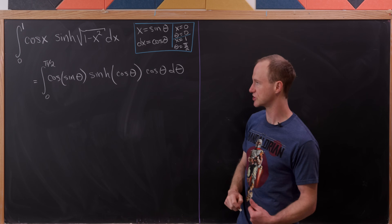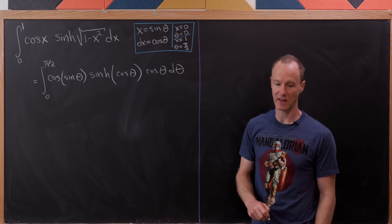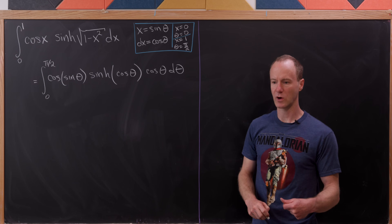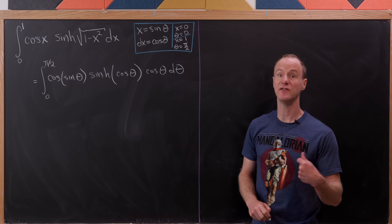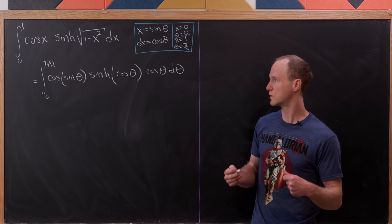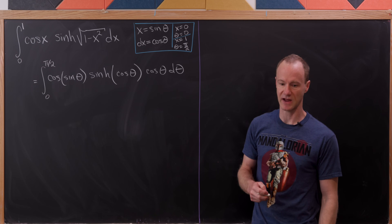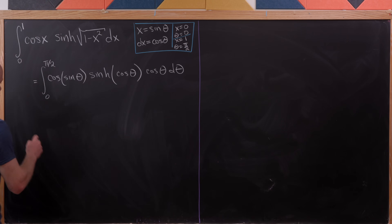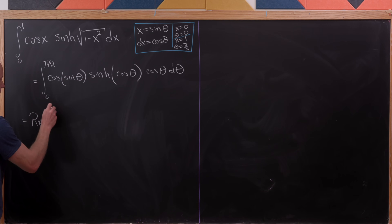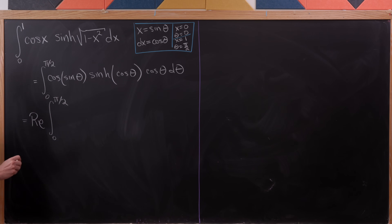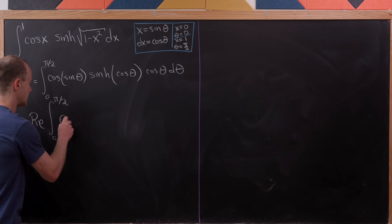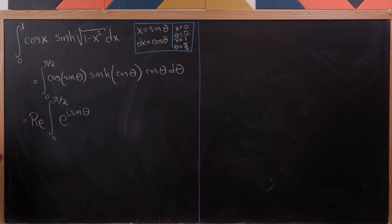Next, we use the exponential version of the cosine function via Euler's formula, taking the real part of e to the i sine theta to represent cosine of sine theta. Specifically, the real part of e to the i sine theta is cosine of sine theta, given that e to the ix equals cosine x plus i sine x.